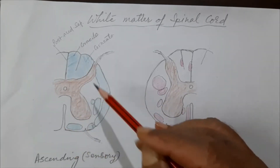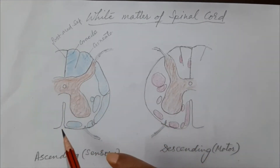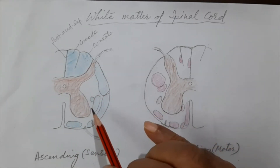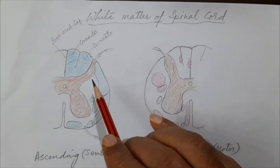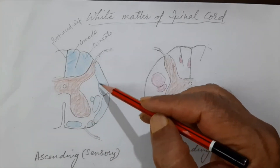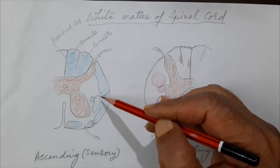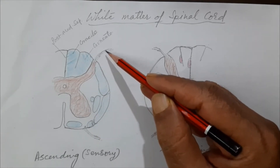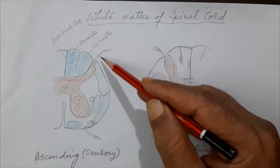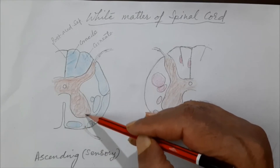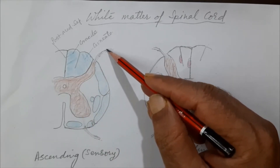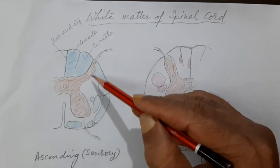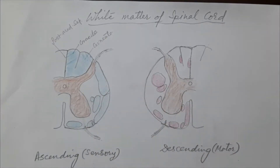Let us now come to the lateral funiculus. This lateral funiculus carries multiple sensory or ascending tracts. It is present between the dorsal spinal root and the anterior spinal root — the anterior spinal root comes from the anterior gray column and the dorsal spinal root goes to the dorsal gray column. All tracts situated between these two roots belong to the lateral fasciculus.